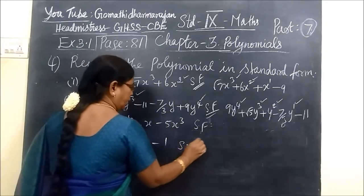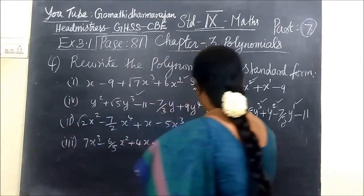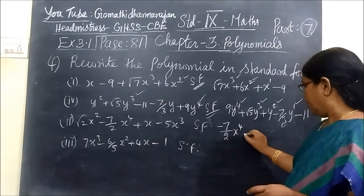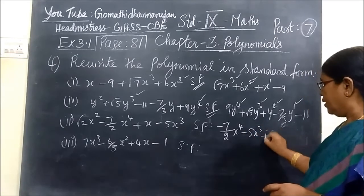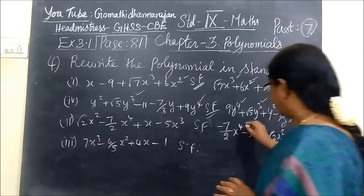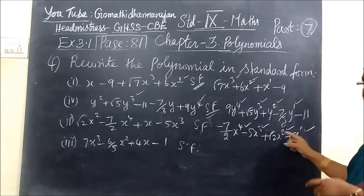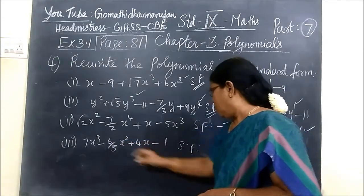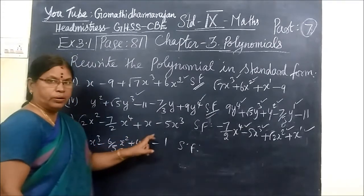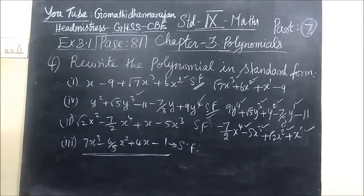For the next part, standard form: here the highest power is 4. So writing minus x power 4 — remember it is minus only, not plus. Then x cubed, then x squared, then x. No constant term, so that's all. Descending order: power 4, 3, 2, 1. The next one is a cube — power 3, power 2, power 1, then power 0. The given question itself is already in standard form.